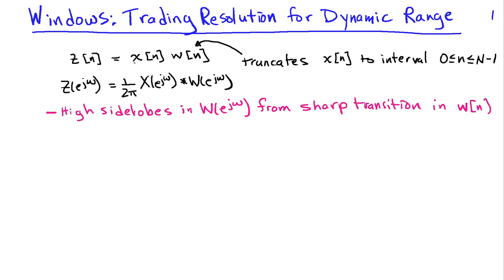Multiplying it by a signal Wn, which is 1 on the interval 0 to capital N minus 1, and that gives us our truncated signal Z of n that we then analyze in the computer.